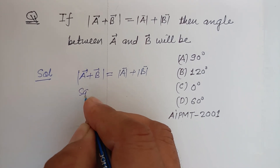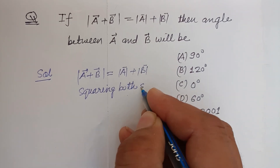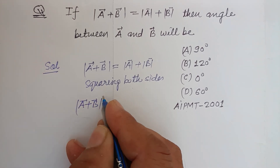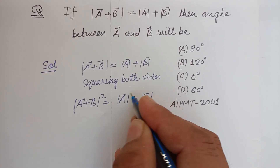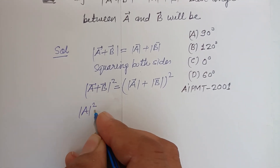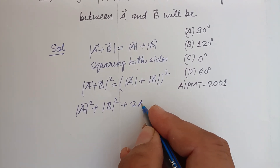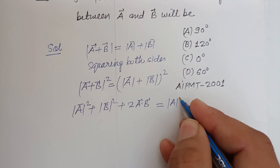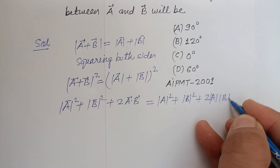So squaring both sides: the magnitude of vector a plus vector b, whole squared, equals the magnitude of vector a plus magnitude of vector b, whole squared. This gives magnitude a squared plus magnitude b squared plus two times a dot b, equal to magnitude a squared plus magnitude b squared plus two times magnitude a times magnitude b.